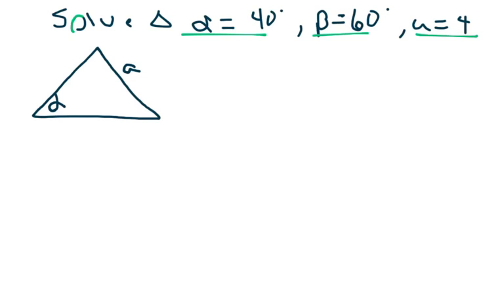If your beta is here, then the side across from beta is here, and if your gamma is here, the side across from gamma is C. So make sure you label your triangle correctly.